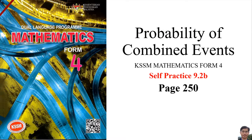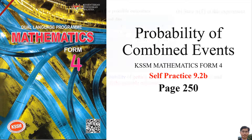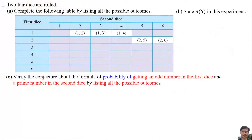Probability of Combined Events, QSSM Mathematical Form 4, Self Practice 9.2b, page 250. Number 1: 2 fair dice are rolled. Part A: Complete the following table by listing all the possible outcomes.